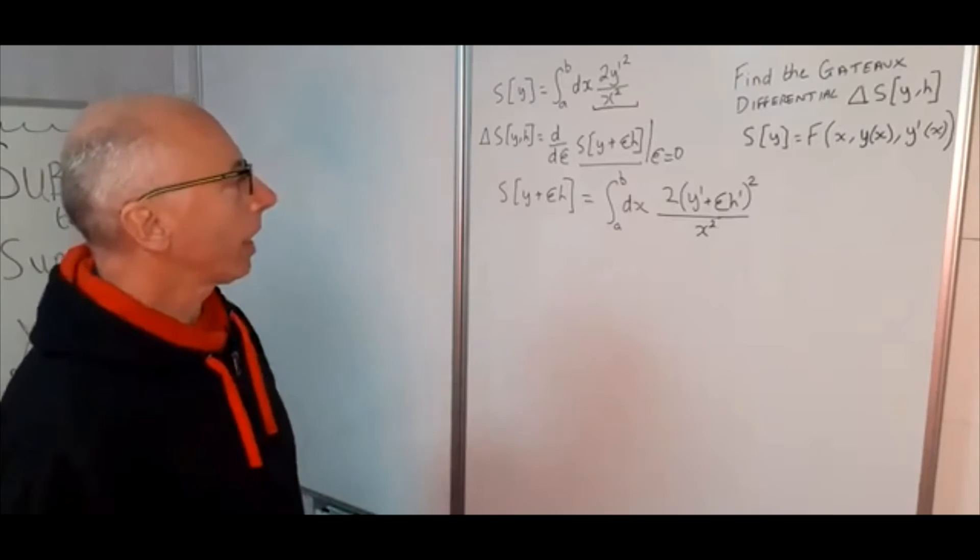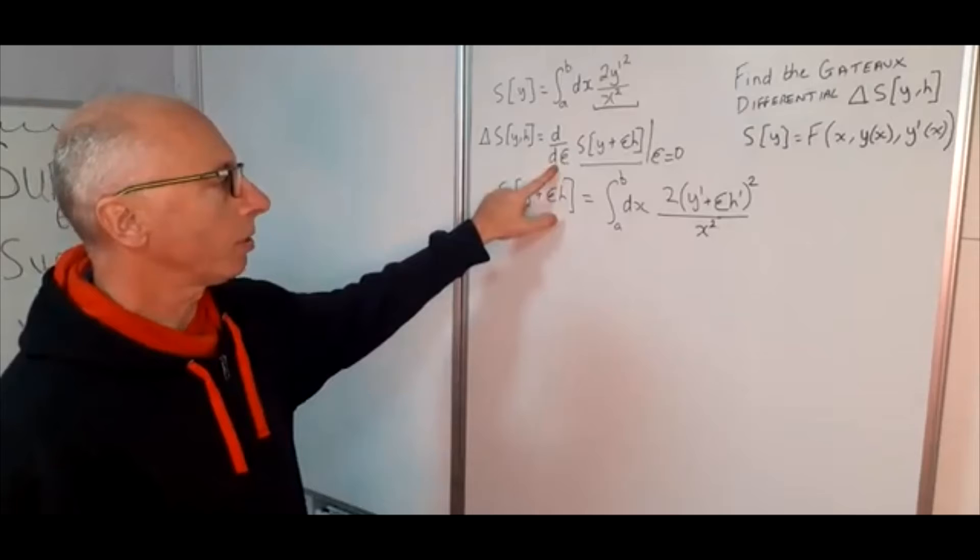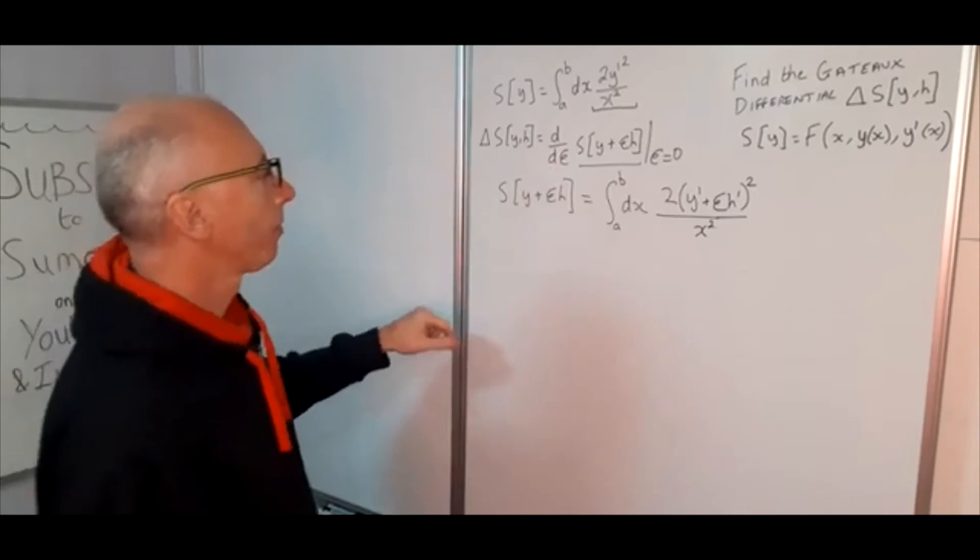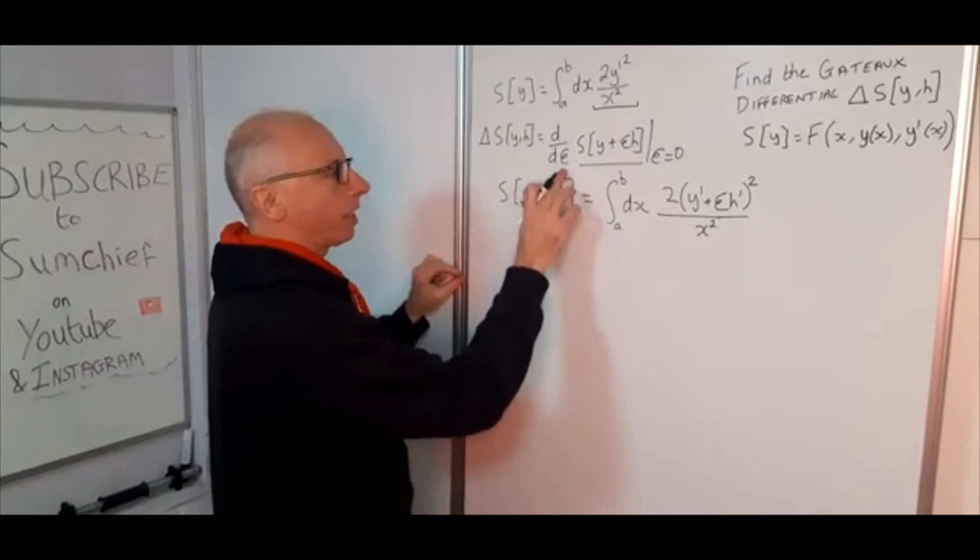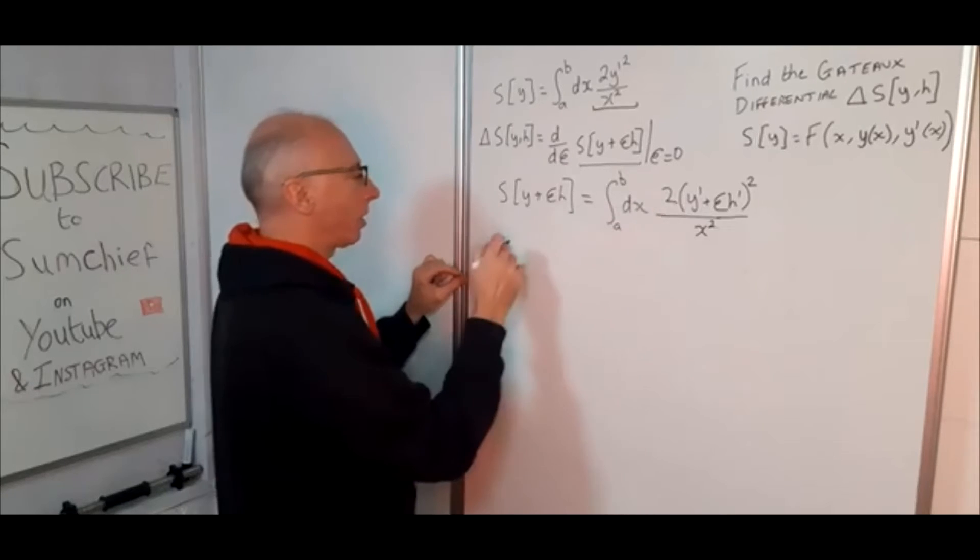Okay, so next stage we want to take the derivative with regards to epsilon. So derivative with regards to epsilon, epsilon is independent of the x so we can bring the derivative inside the functional.